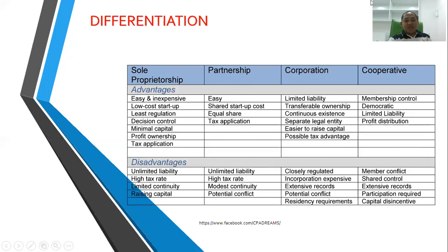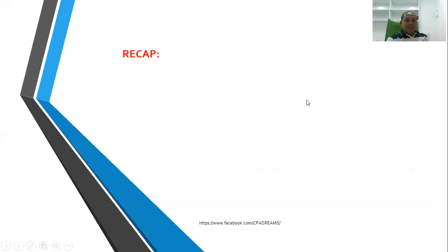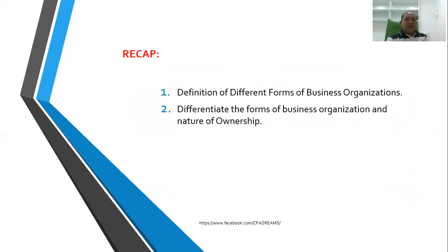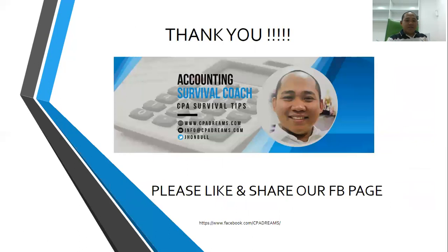In terms of disadvantages: sole proprietorship has unlimited liability, higher tax rate, and limited continuity and capital-raising ability. Partnership also has unlimited liability and high tax rate. Corporation is more closely regulated. Cooperatives face member conflict, shared control, and extensive record-keeping requirements. To recap: we defined the forms of business organizations, differentiated them from each other, and identified their advantages and disadvantages.